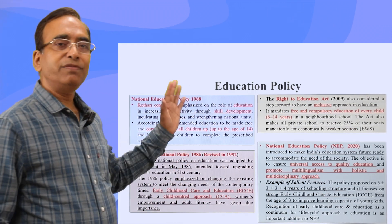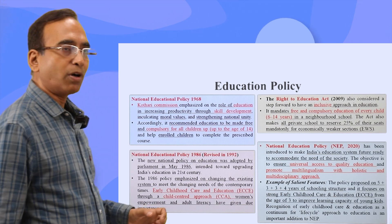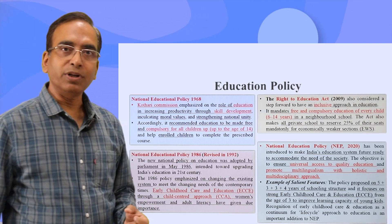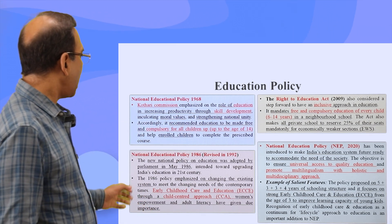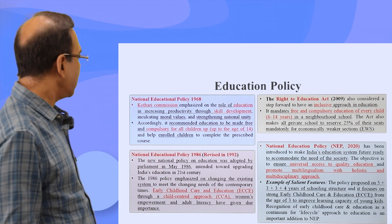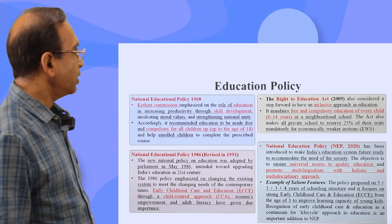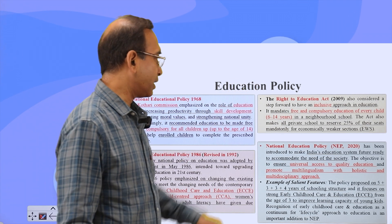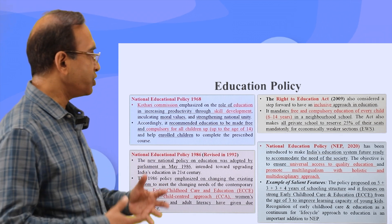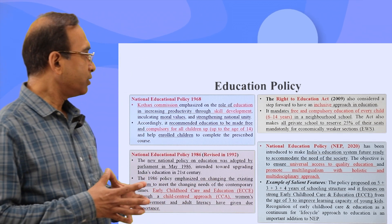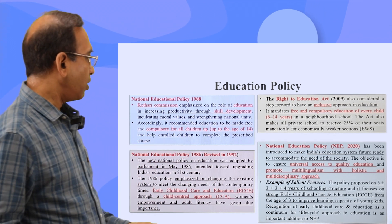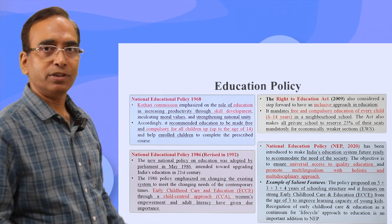In 1968, following the Kothari Commission's report, we talked about skill development and compulsory education for children. Then we had early education and a child-centric approach, which was brought in 1986 and modified in 1992. In 2009, the most important milestone was the Right to Education Act. And in 2020, there was a significant change in our National Education Policy — trying to make policies more holistic, making children job-ready, and adopting a life-cycle approach to education.